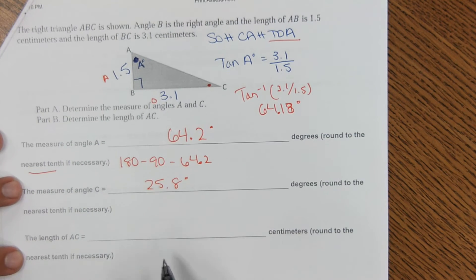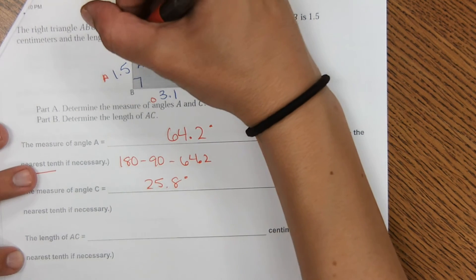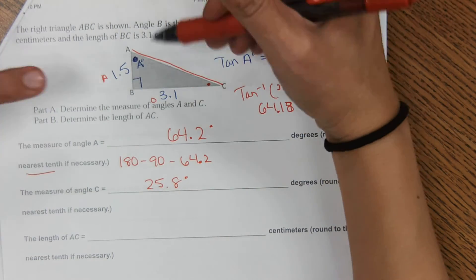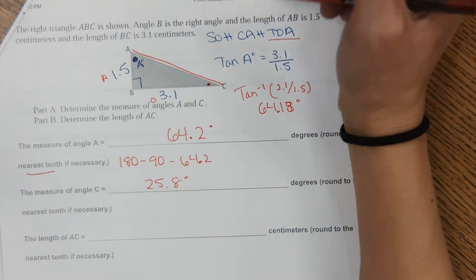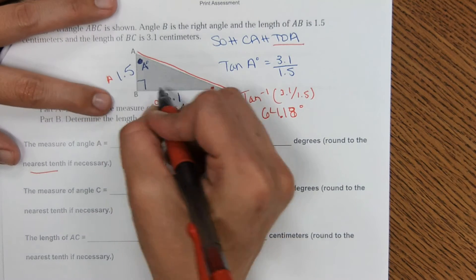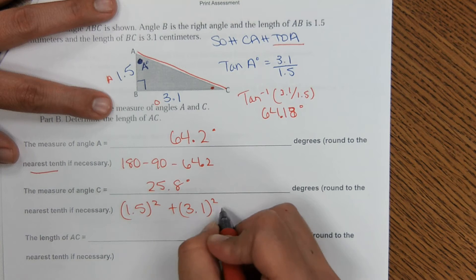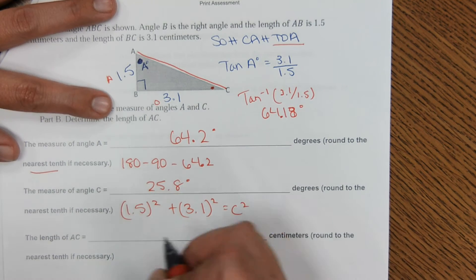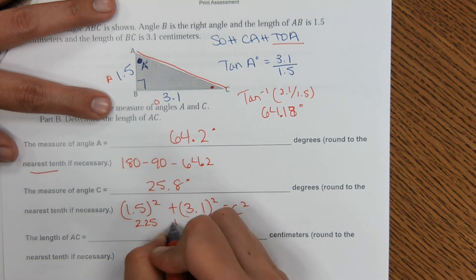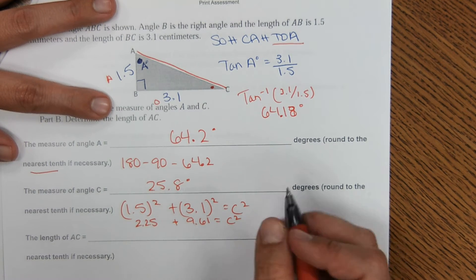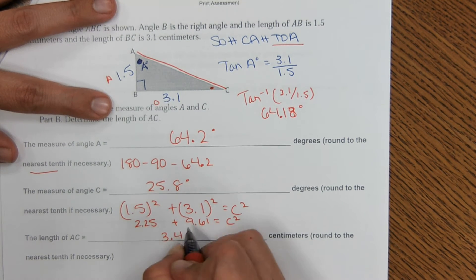And then the third part of this question, find the length of AC right here. Okay, the length of AC, there's different ways I could do this. I could use trigonometry if I want to. I'm going to use Pythagorean theorem now since I have a right triangle. 1.5 squared plus 3.1 squared equals c squared. 2.25 plus 9.61. And we get 3.4.